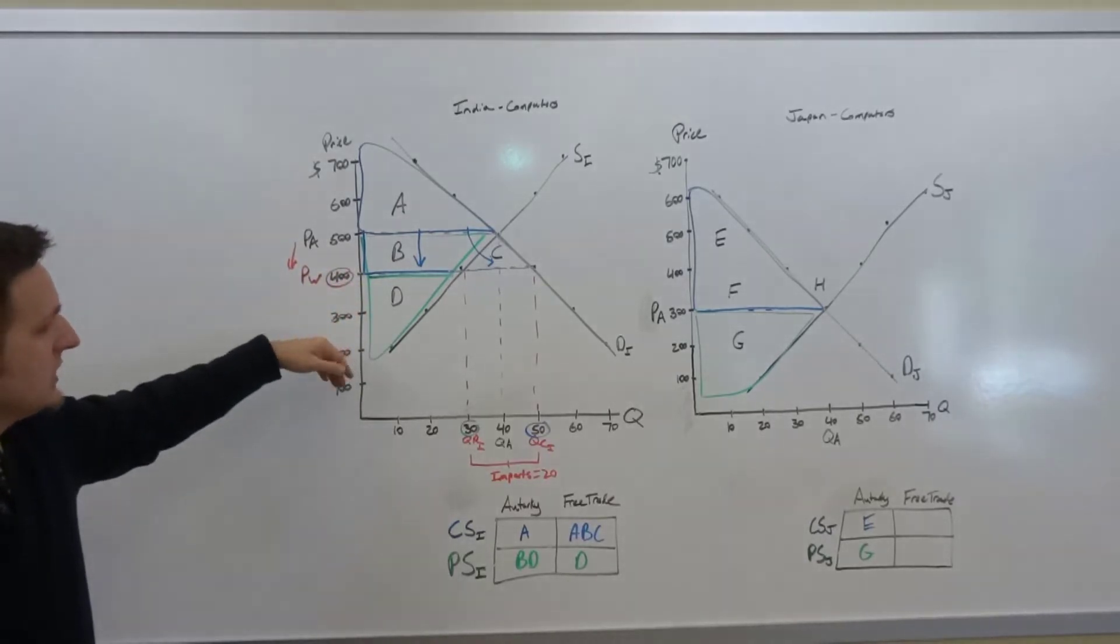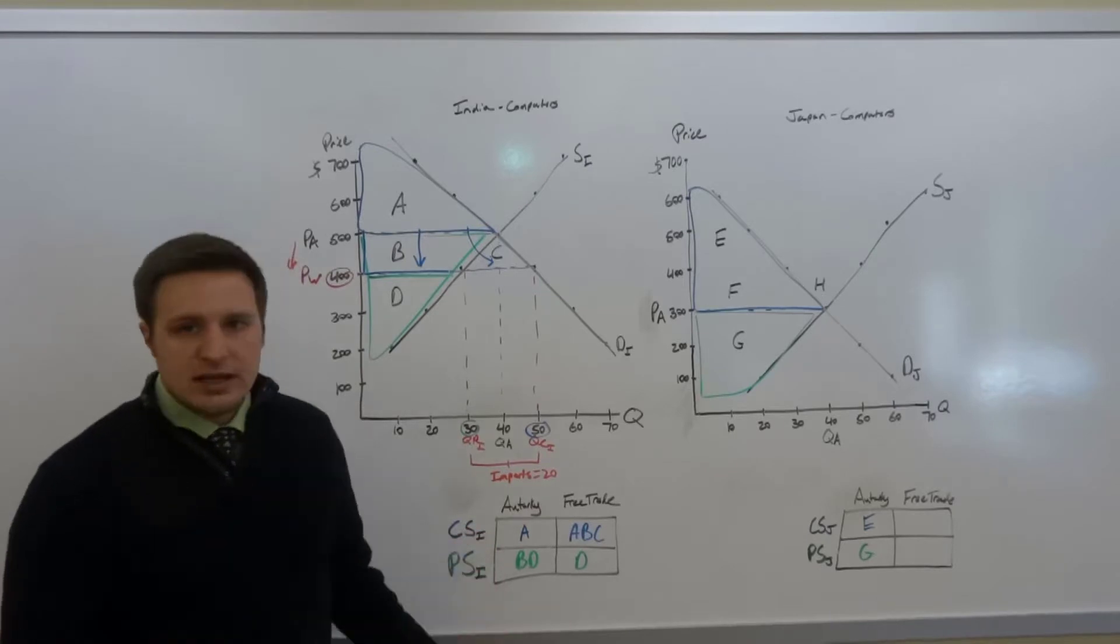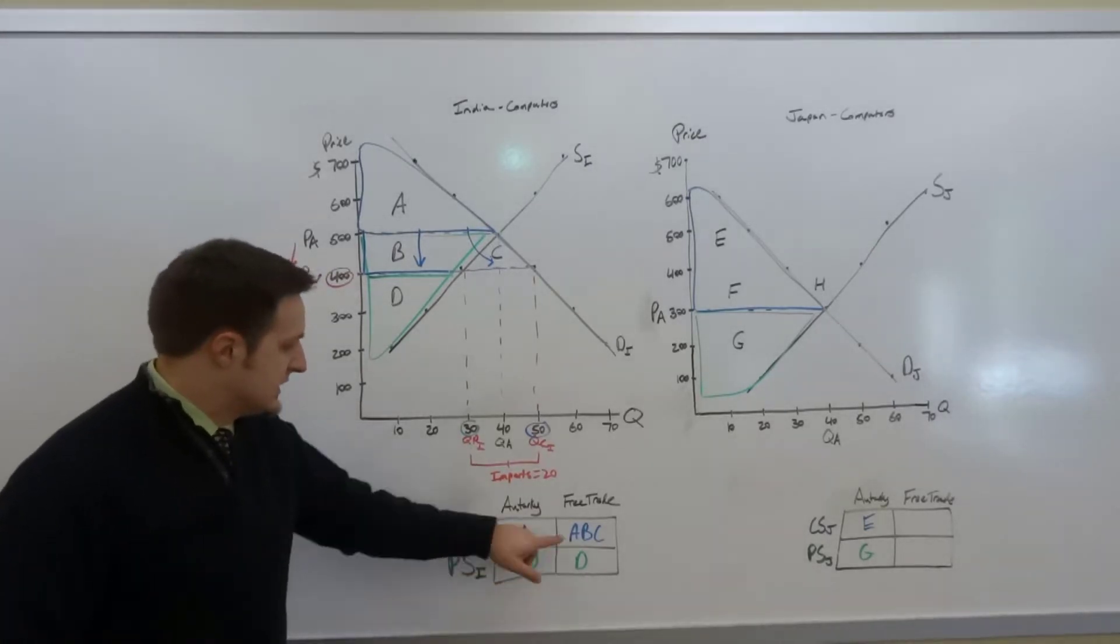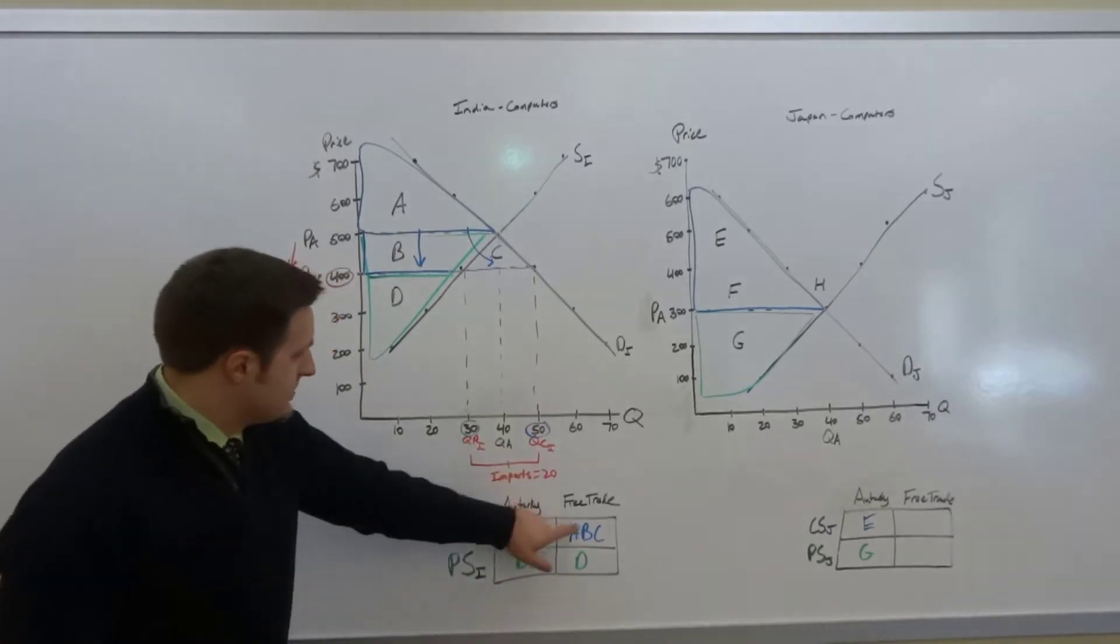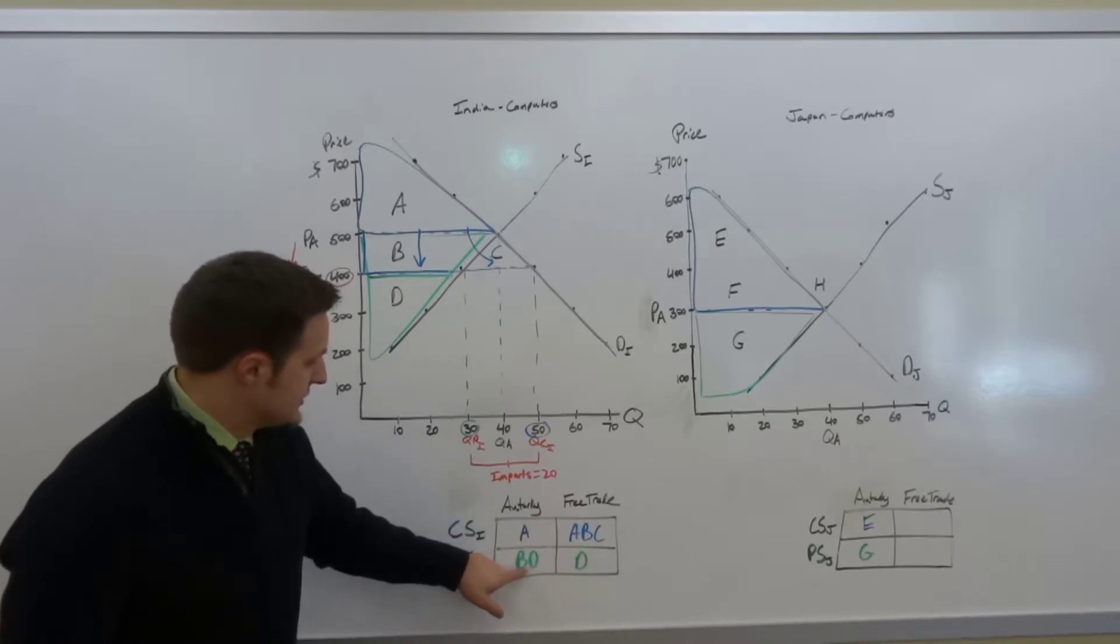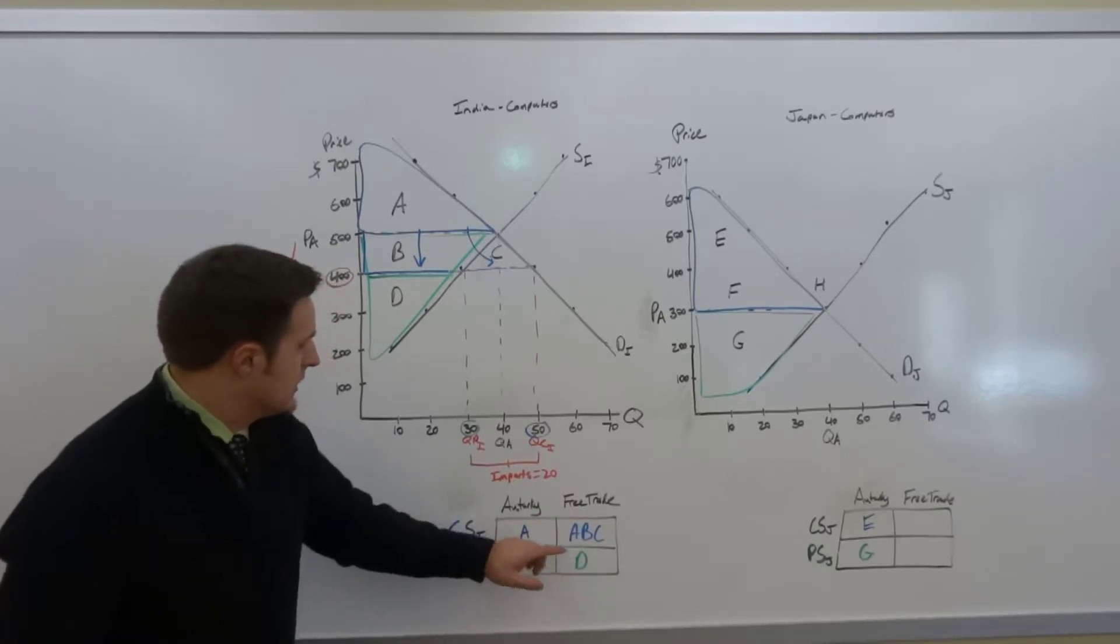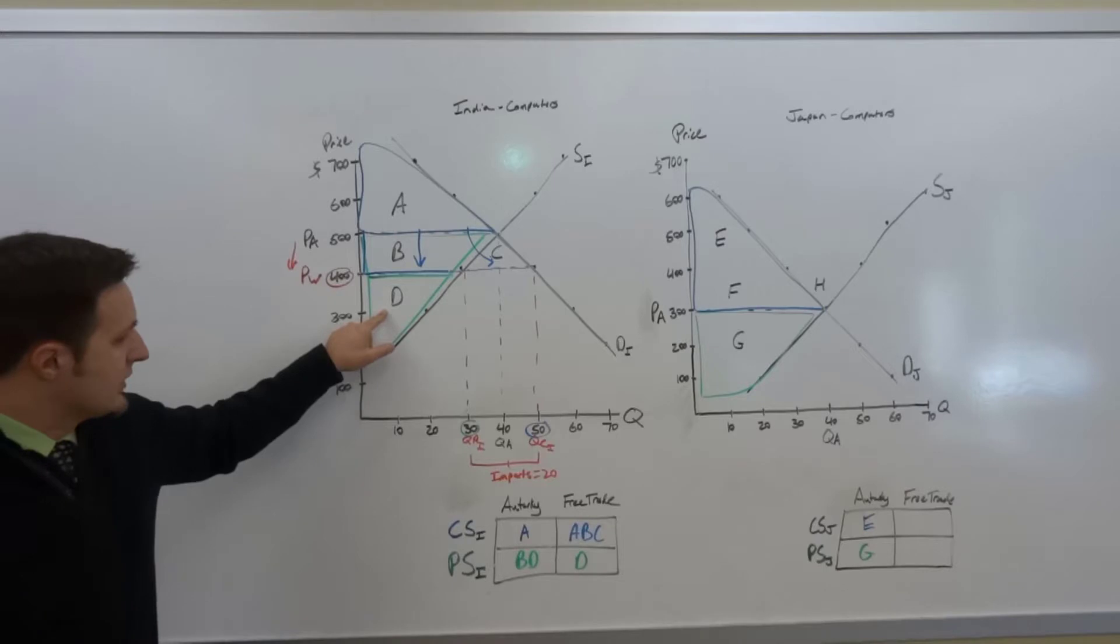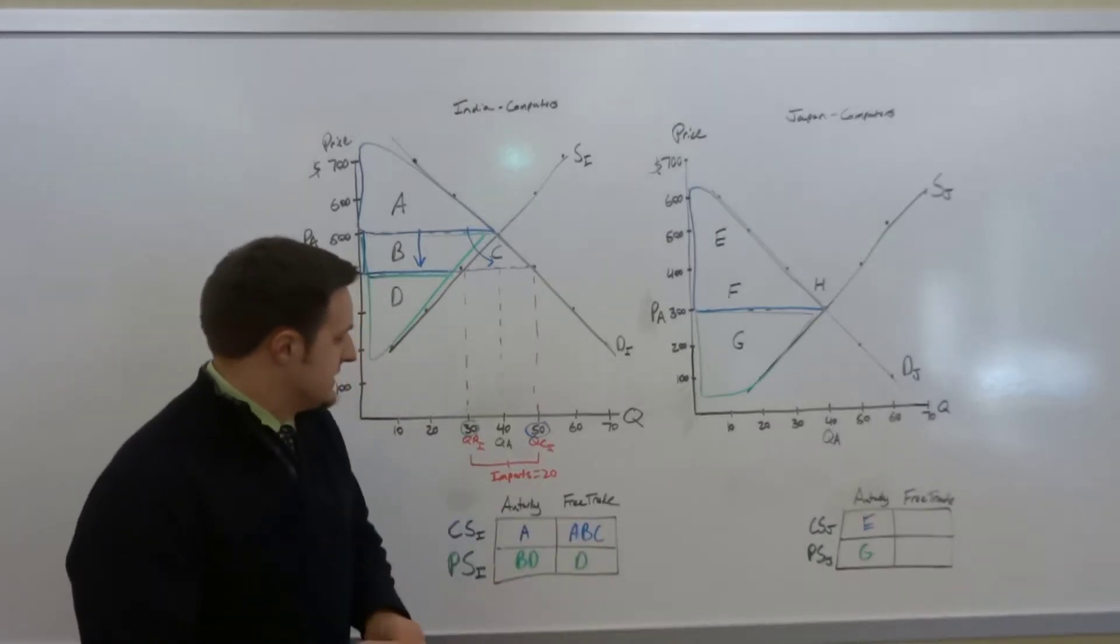But on balance, there are more gains than losses. So we can see that the Indian consumers have area B transferred from producers to consumers. The producers only have area D, and then area C is the net gain.